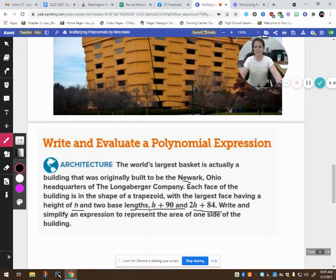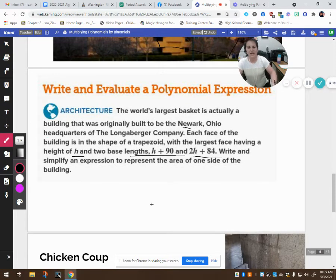So it says write and simplify an expression to represent the area of one side of the building. Well, first we have to recall how to find the area of a trapezoid. So area of the trapezoid is one half times the height times the sum of the bases. So base one plus base two.